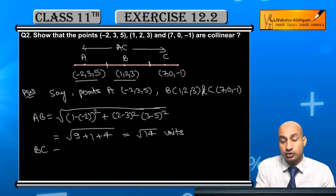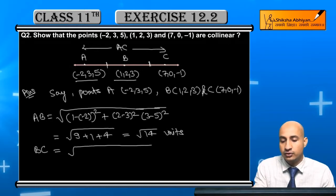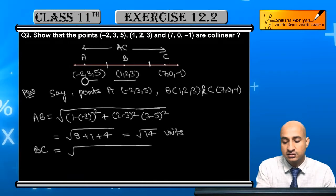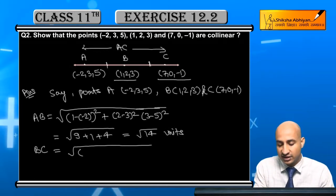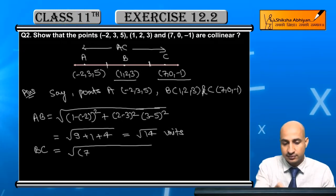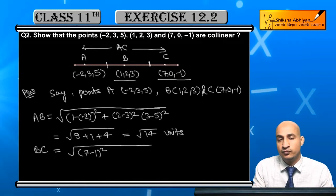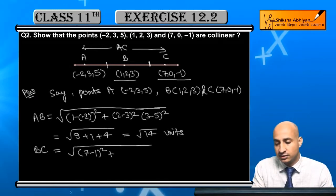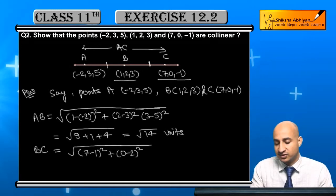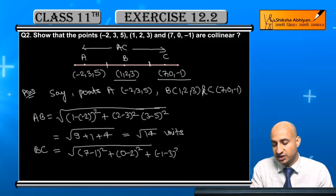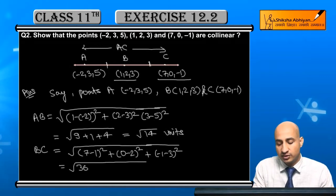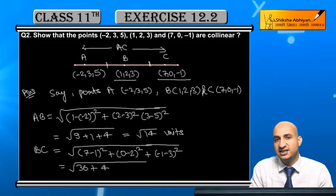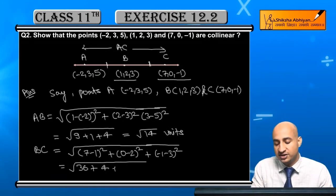Next, मैं BC को calculate करता हूँ। C की coordinates को x2 y2 z2 and B की coordinates को x1 y1 z1 consider करते हैं। So BC = square root of (7 minus 1) squared + (0 minus 2) squared + (minus 1 minus 3) squared = square root of 36 + 4 + 16 = square root of 56.